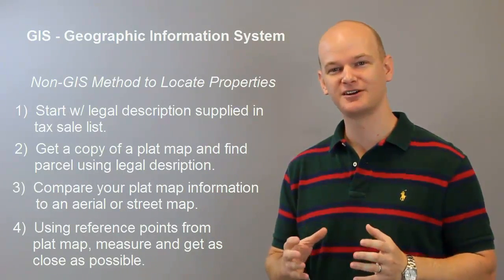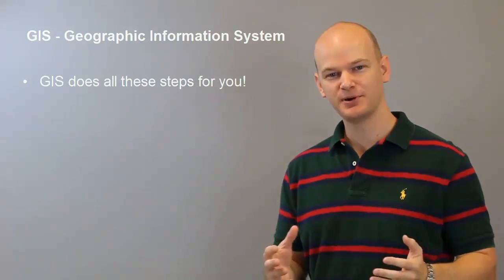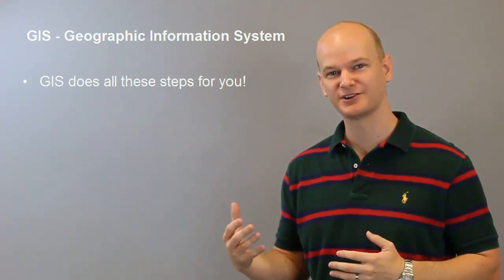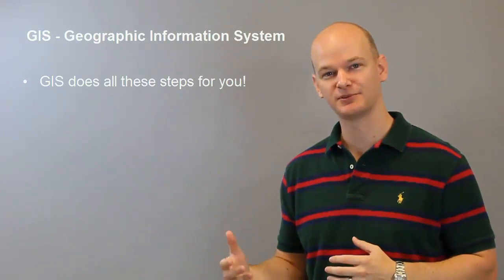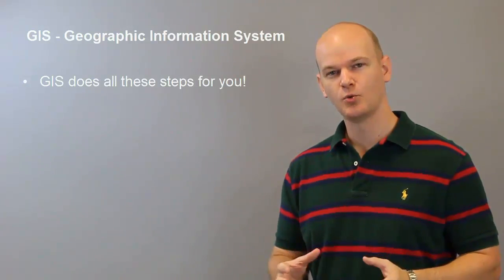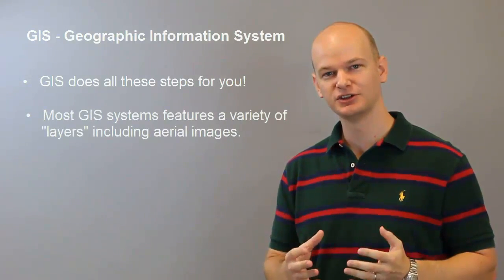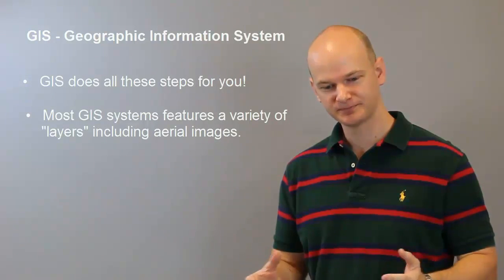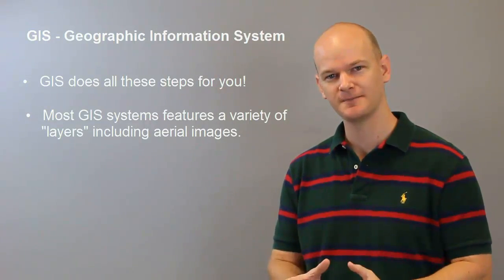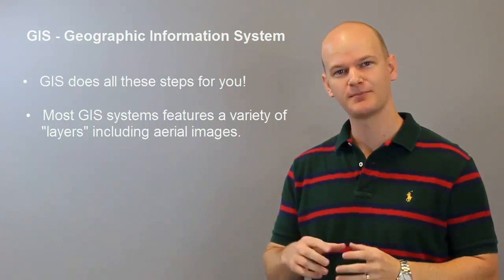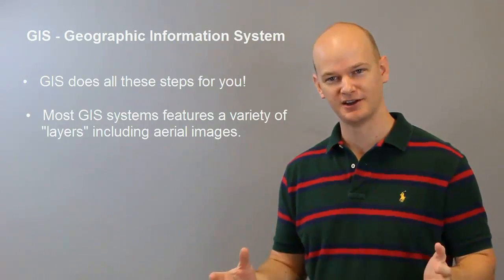This is where GIS comes in very, very handy. It does all this information for you — it transposes the plat map onto an actual map. If it's a metes and bounds legal description, it also puts it onto an actual map. Most counties that use GIS will have the availability of a layer that allows you to look at it as an aerial photo, with an outline of where that property is. You'll be able to see if there's a structure on it and what the neighbors look like.